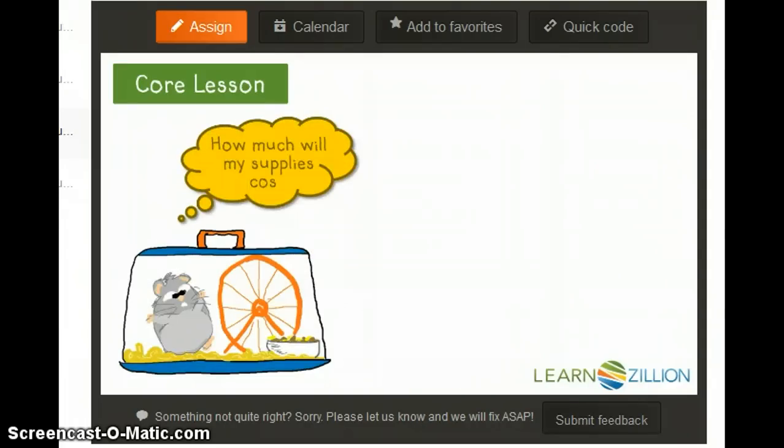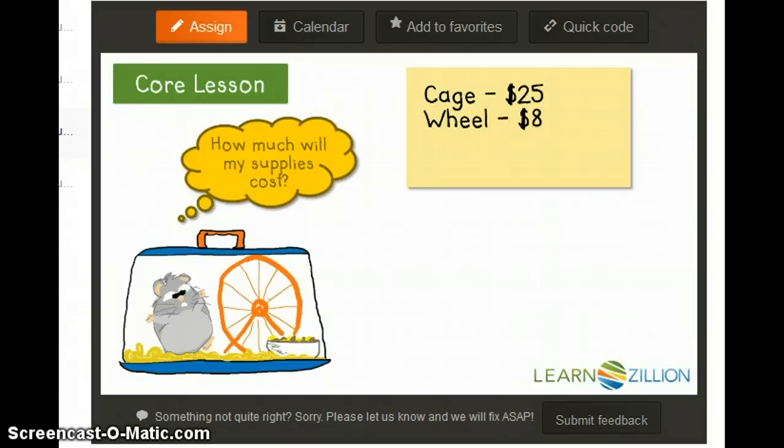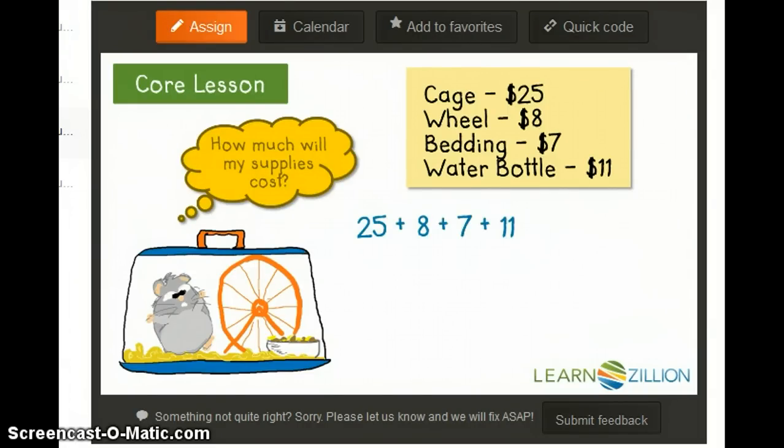How much will the hamster supplies cost? The cage costs $25, the wheel is $8, the bedding is $7, and the water bottle costs $11. We will add 25 plus 8 plus 7 plus 11.